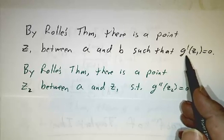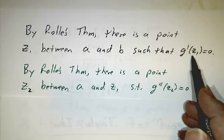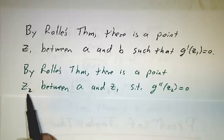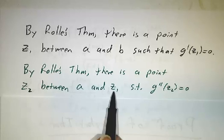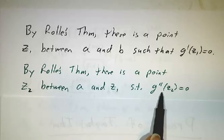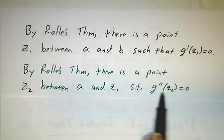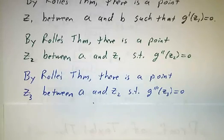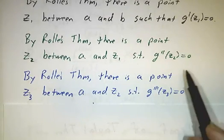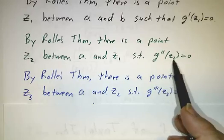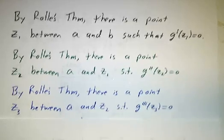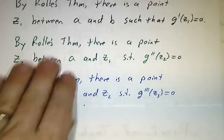And then we use Rolle's theorem again. g' of a is 0 and g' of z1 is 0. We apply Rolle's theorem to g', so there has to be a point, another point between a and z1, where the derivative of g' is 0. In other words, g'' is 0. g'' of a is 0, g'' of z2 is 0. And so somewhere in between, g''' is 0. And we keep going.